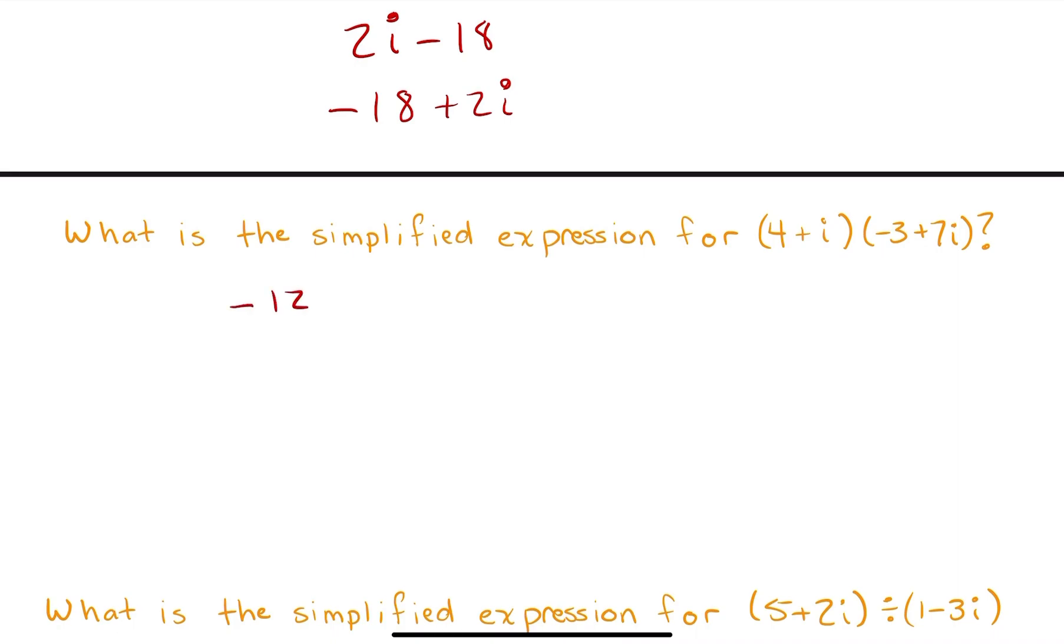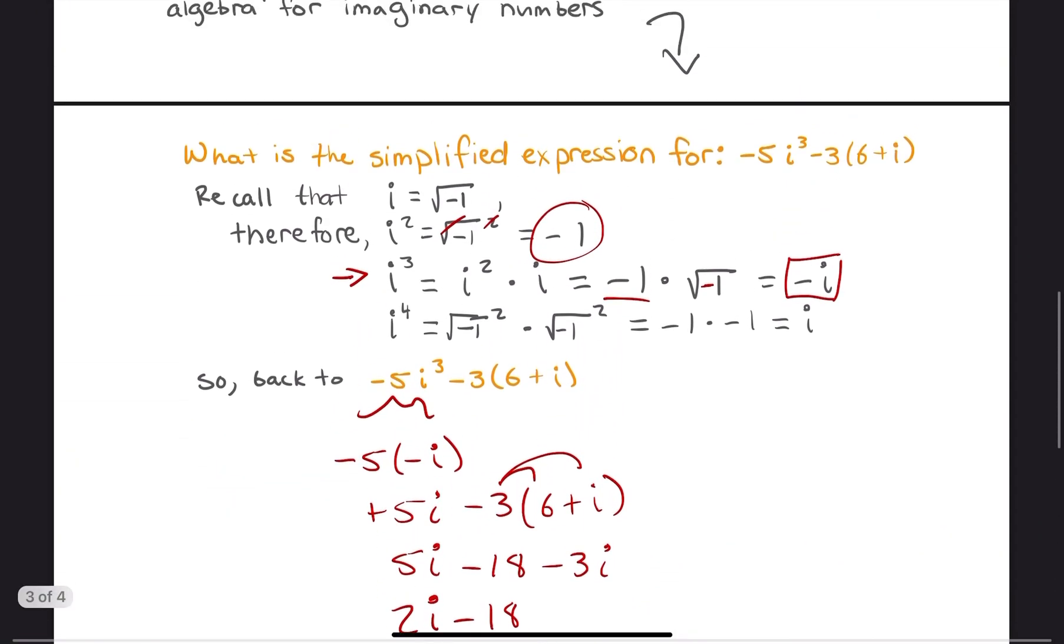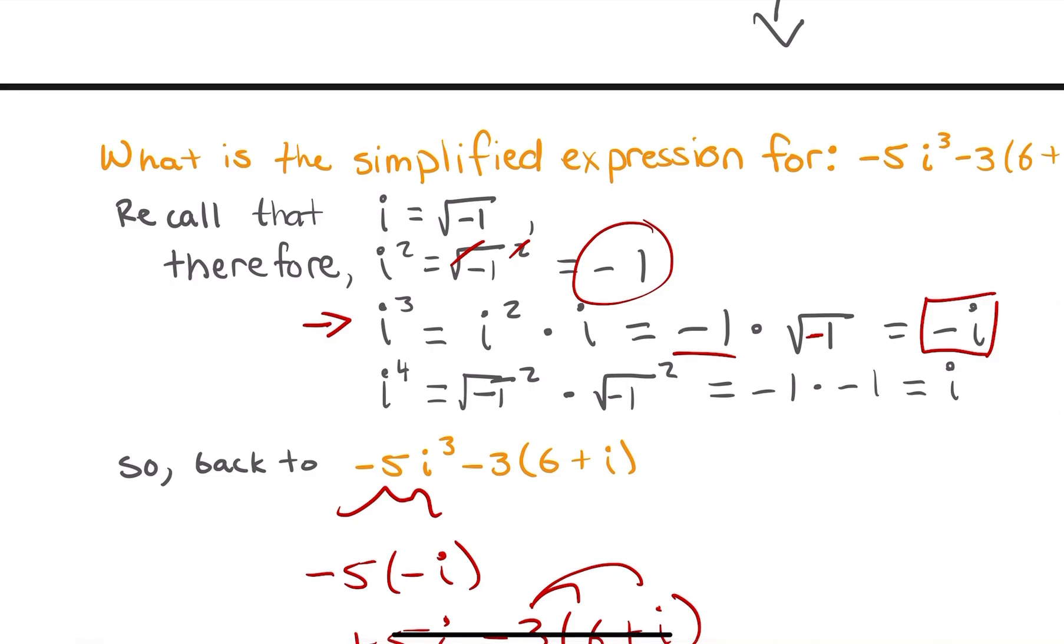Then I'm going to take the inside numbers. i times negative 3. That's going to give me negative 3i. I'll add the last, the outside numbers, 4 and 7i. That's going to give me positive 28i. And then the last numbers only, plus 7i squared. And this i squared just showed up again. And that's kind of why we went over what happens when you square i. i squared, we defined as negative 1.